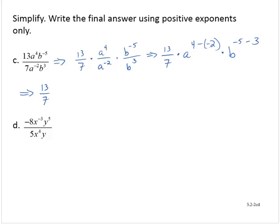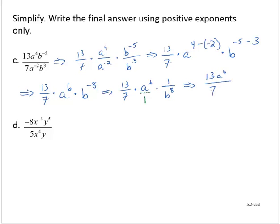We have to be careful with the arithmetic here. I used parentheses around that negative 2, so a to the fourth subtract negative 2 is 4 add 2, giving a to the sixth. And b to the negative 5 subtract 3 would be b to the negative eighth. We're asked to use only positive exponents, so that becomes 13 sevenths times a to the sixth times 1 over b to the eighth, which multiplies out to 13a to the sixth over 7b to the eighth.